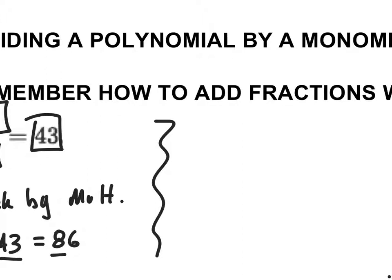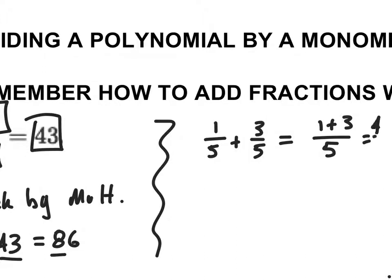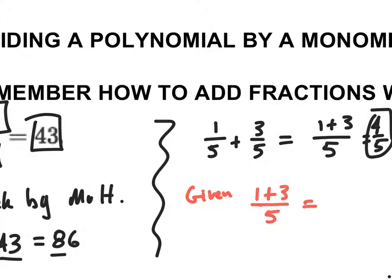The other thing I want you to remember about fractions: remember when we add fractions, say 1 fifth plus 3 fifths — if I have a common denominator, I can write this as one common denominator and add my numerators, giving me 4 fifths. As a result, you're going to be given a fraction like 1 plus 3 over 5, and I want you to be able to rewrite this as 1 over 5 plus 3 over 5. We need to be able to rewrite in order to answer the next few questions.